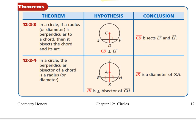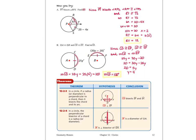Now let's move to theorems 12-2-3 and 12-2-4. Theorem 12-2-3 says: in a circle, if a radius or diameter is perpendicular to a chord, then it bisects the chord and its arc — meaning each half of the chord is congruent, and each half-arc is congruent. Theorem 12-2-4 says: in a circle, the perpendicular bisector of a chord is a radius. So if we have that perpendicular bisector, we know it is a radius or diameter of the circle.